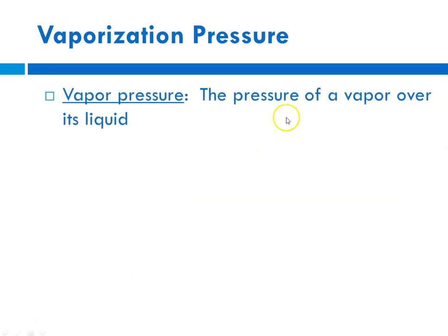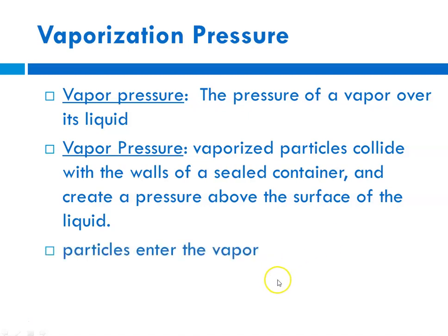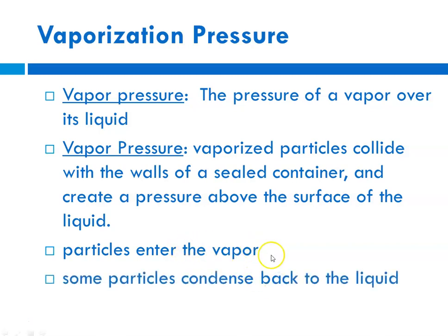Vapor pressure is the pressure of a vapor over its liquid. The vaporized particles are colliding with the walls of a sealed container or at the surface of a liquid, and we refer to that pressure as the vapor pressure. If you have a water bottle in the summer in your car, you might notice it gets all foggy at the top — the liquid is vaporizing, it can't escape because there's a cap, so it builds up a pressure. Eventually some of that vapor will condense and drop back down, creating an equilibrium between particles entering the vapor and condensing back to liquid.